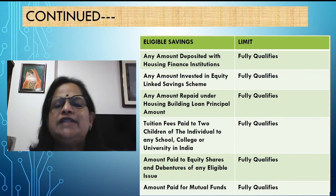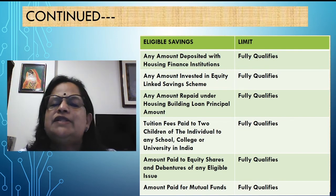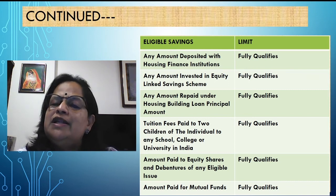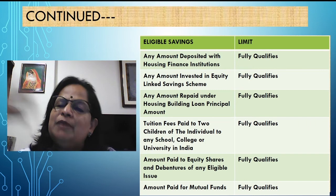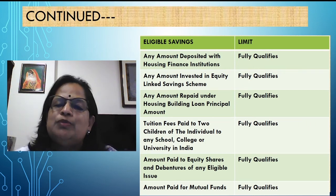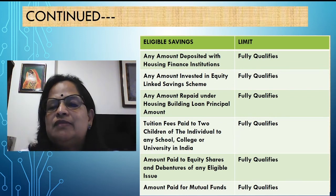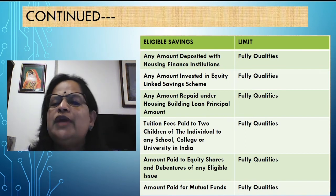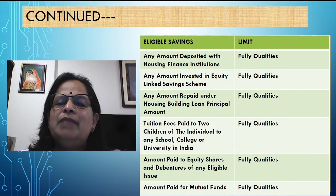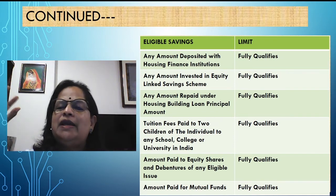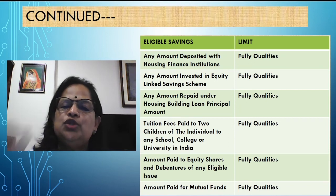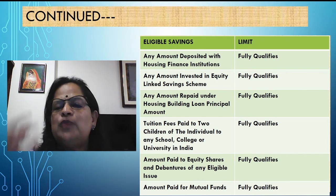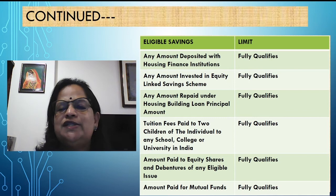Any amount invested in equity-linked savings scheme fully qualifies. The savings scheme not only gives interest but also dividend, just like an equity shareholder, and that scheme is fully qualified for 80C deduction. Any amount repaid under a housing building loan — the principal amount — you can claim under 80C deduction; the interest is claimed under income from house property. Tuition fees paid for two children of the individual to any school, college, or university in India fully qualifies. If paying to a foreign university, it is not eligible.